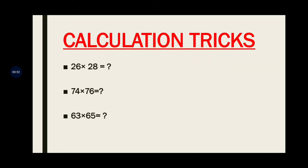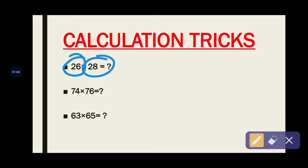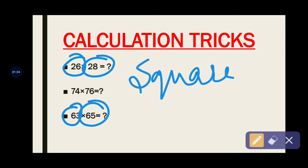See here: 26 × 28, 74 × 76, 63 × 65. You can see that 26 and 28 are 2 alternative even numbers, and 63 and 65 are 2 alternative odd numbers. When we come across this type of question, how do we get the answer directly? This is very important, and that's why I regularly remind you to learn squares.